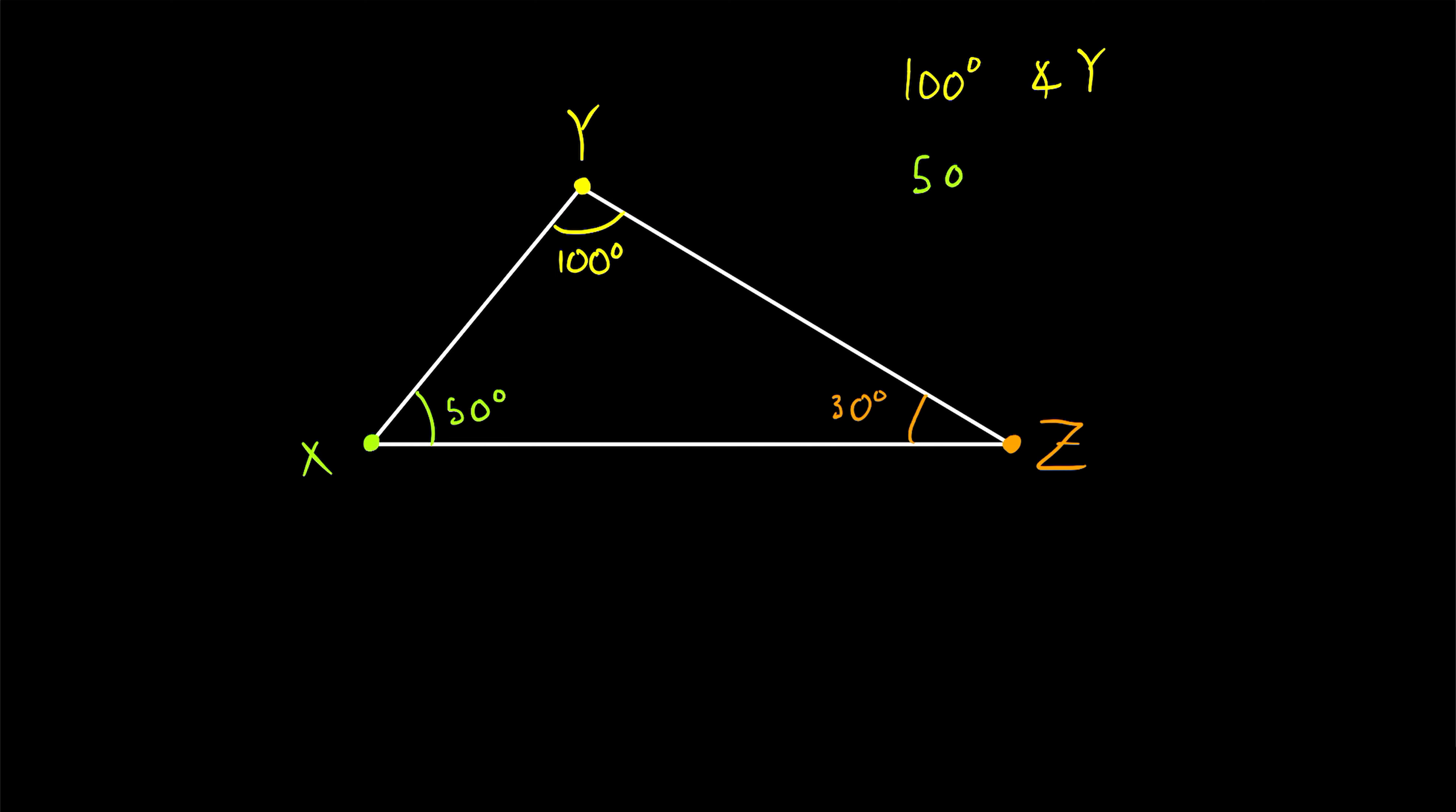We could call the 50 degree angle using the three letter notation angle Y, X, Z. That's this angle here. Remember, when using the one letter notation, we name the angle after its vertex. When using the three letter notation, we put the vertex of the angle in the middle.